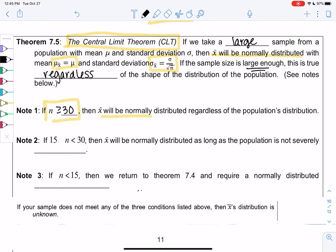If it's between 15 and 30 (15 included, 30 not), then we can still use the normal curve as long as the population is not severely skewed. We may look at a histogram to check that.